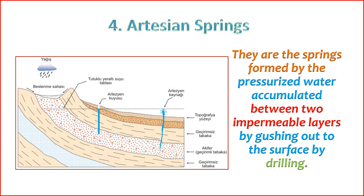Artesian springs, also known as artesian wells or aquifers, are geological formations where groundwater naturally rises to the surface under pressure without the need for pumping. This phenomenon occurs when an aquifer, a permeable rock layer that holds water, is sandwiched between two impermeable layers. The pressure results from the natural recharge of the aquifer at higher elevations. Key features include: 1. Pressure release — the water in an artesian aquifer is under pressure due to the weight of overlying rocks. When a well is drilled into the aquifer, the pressure forces the water to rise without any external pumping. 2. Continuous flow — artesian springs often provide a continuous flow of water. The constant pressure within the aquifer ensures a reliable and sustainable source. 3. Natural discharge — artesian springs may discharge water at the land's surface or into rivers, creating distinctive features like artesian wells or springs.